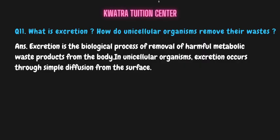Question number eleven: what is excretion, and how do unicellular organisms remove their waste? Excretion is a biological process that helps our body remove all waste products and toxic materials. Unicellular organisms excrete by the simple method of diffusion from their body surface. In multicellular organisms, however, there is a special body part through which excretion occurs.